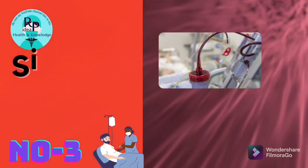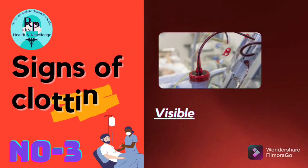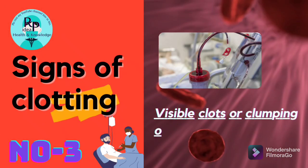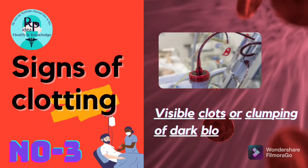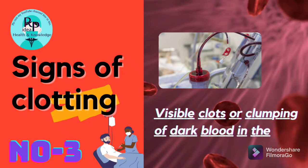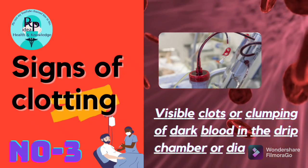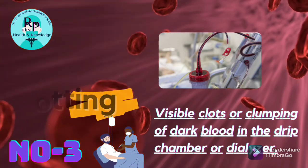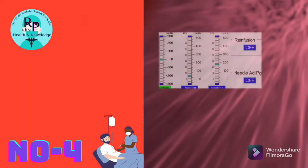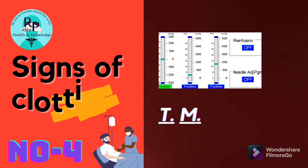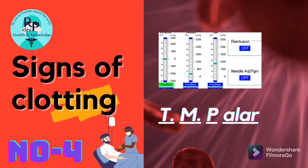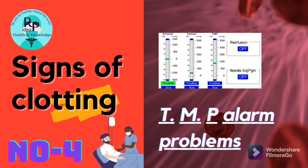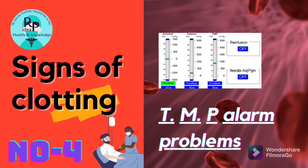3. Visible clots or clumping of dark blood in the drip chamber or dialyser. 4. TMP alarm problems.